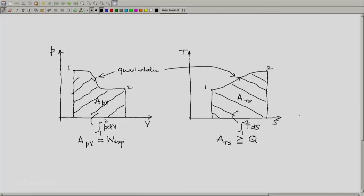So one area represents the expansion work. The other area does not directly represent the heat transfer but it can be greater than or at most equal to the heat absorbed by the system.